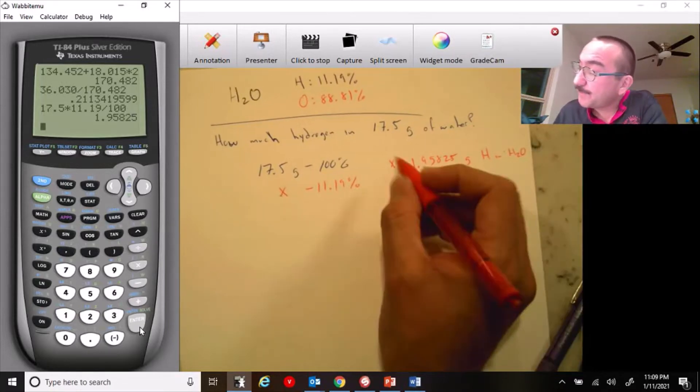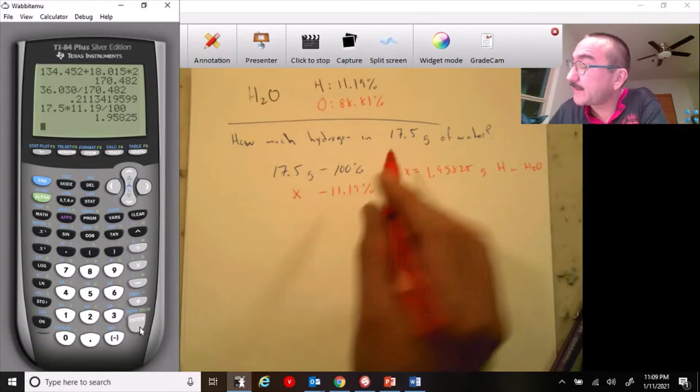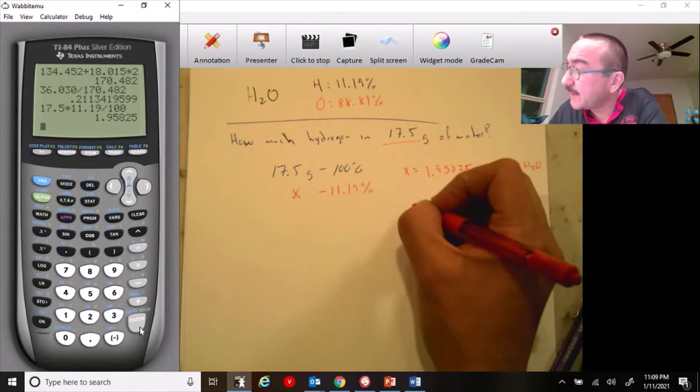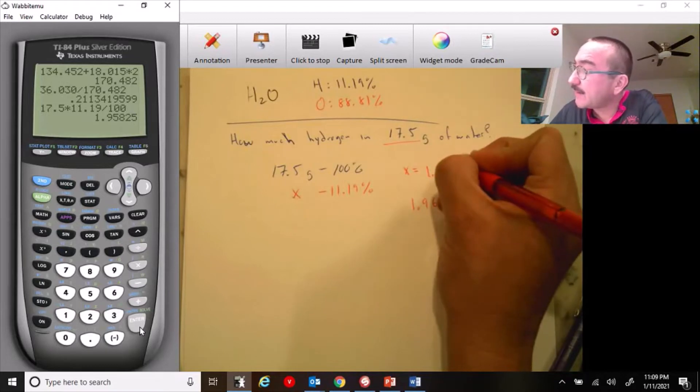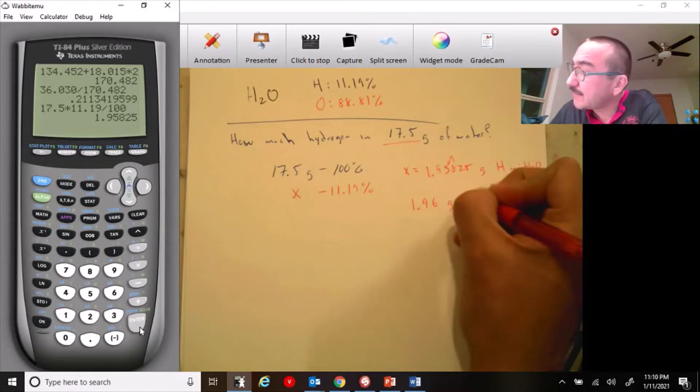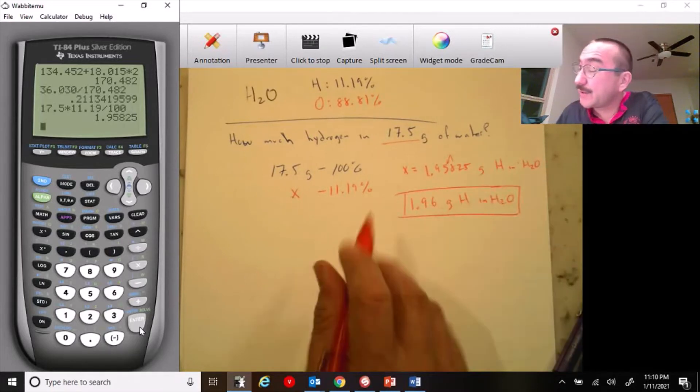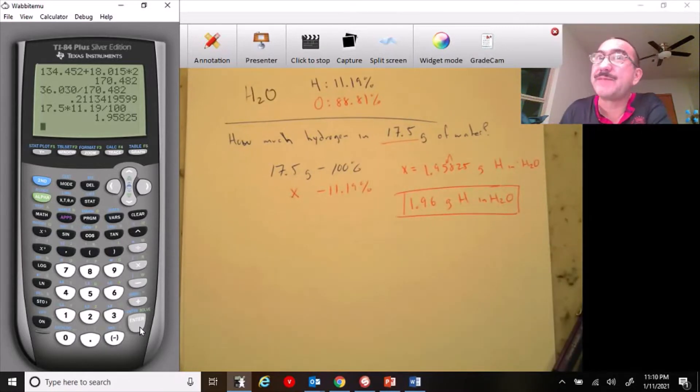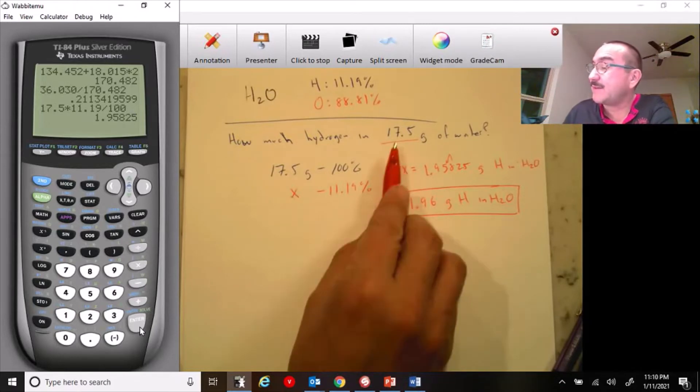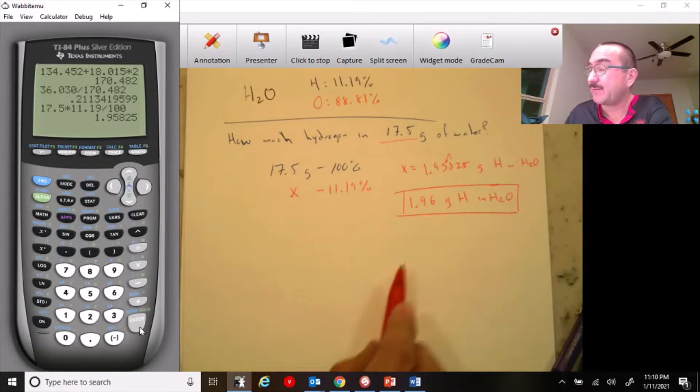And I would say that my x is equal to 1.95825 grams of hydrogen in water. But notice, I have to look at sig figs and I have three sig figs. So my answer would be 1.96, the eight rounds the five, grams of hydrogen in water. And this would be my final answer. Notice here, we do have, yesterday we didn't have sig figs because there was nothing we had measured, but here the initial value has sig figs so we have to apply sig figs.